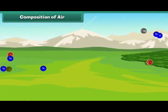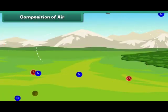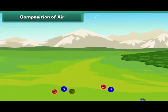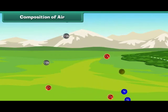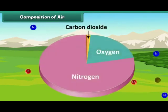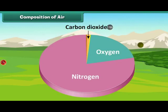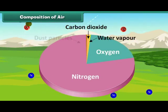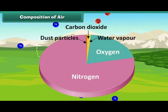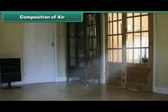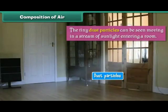Air is made up of several gases, the most important being nitrogen, oxygen, and carbon dioxide. Air also contains water vapor and dust particles. The tiny dust particles can be seen moving in a stream of sunlight entering a room.